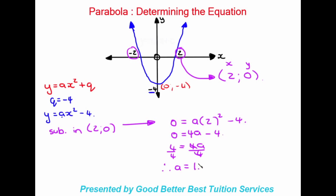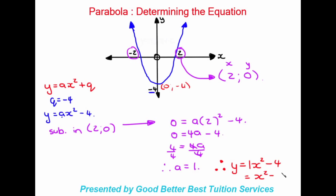It's also very important to note that a is a positive number, which confirms it's correct because the parabola is a smiley face — positive a gives a smiley face, negative a gives a sad face. Therefore the equation of this graph is y equals x squared minus four. So: the turning point gave us q equals negative four, then we substituted in another given coordinate to find a, and wrote our final equation.